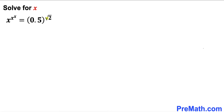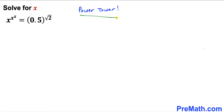Welcome to pre-math. In this video we have got this nested exponential equation: x to the power x to the power x equals 0.5 to the power square root of 2. This kind of equation is also called a power tower. Now we are going to solve this equation for x.